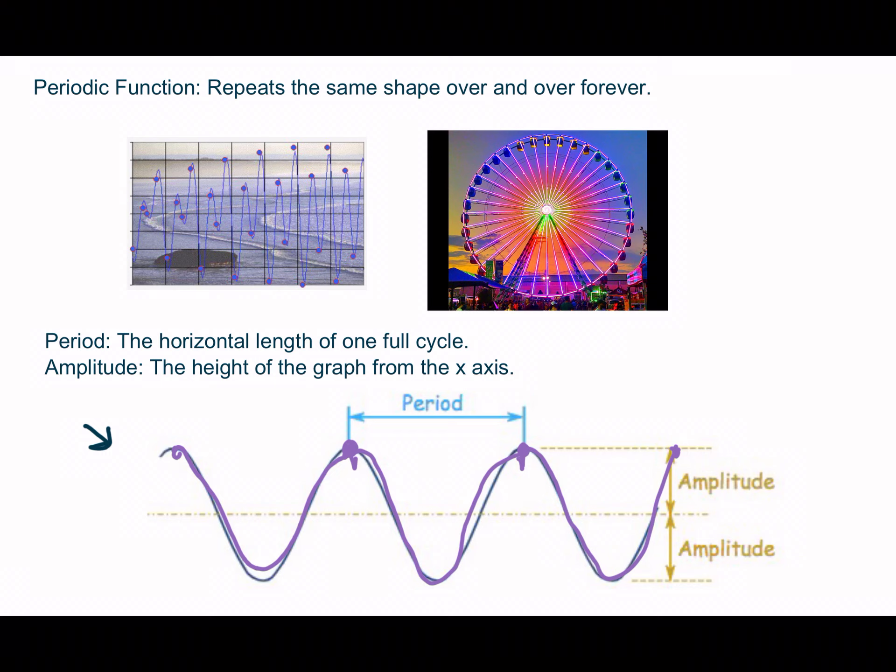The amplitude is the distance from the graph to the x-axis. So here, if my dotted yellow line represents the x-axis, it's the distance from here all the way up to where the function makes its maximum height, and then same distance from the x-axis down to where the function makes its minimum height.